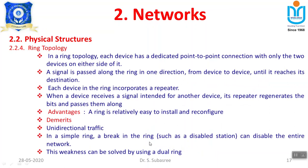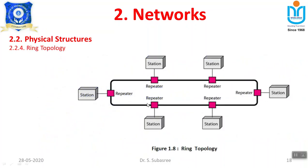A break in a simple ring can disable the entire network, similar to bus topology. This weakness can be solved by using a dual ring, though it is costly. With a dual ring, data can travel in both directions — if one direction fails, the other is used, and shorter paths reduce travel time. However, the installation cost for dual ring topology is very high.